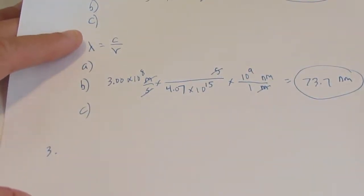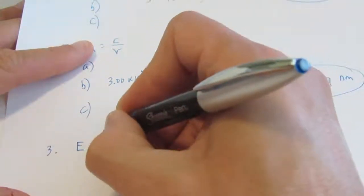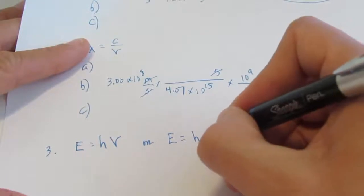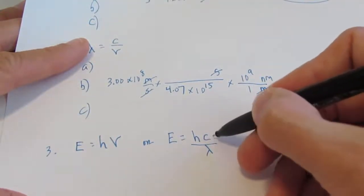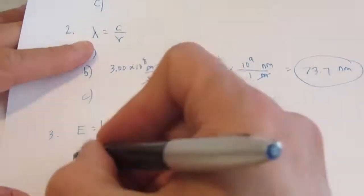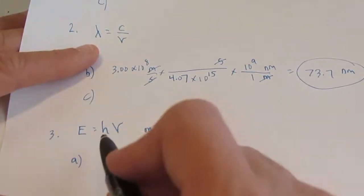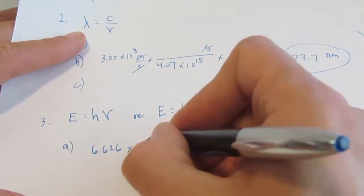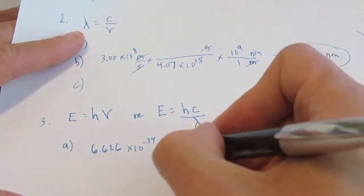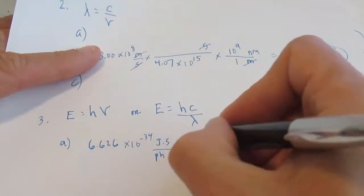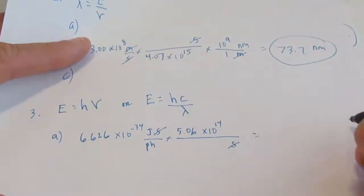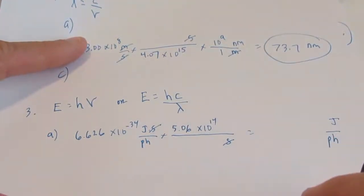Let's hop down to number three. Number three: I want the energy in joules. We're going to use one of two equations. Energy equals h, Planck's constant, times the frequency; or energy equals h times C over lambda — remember C over lambda is the same as frequency, so I can use either equation. On letter A I give you the frequency, so we use E = hν. H is 6.626 times 10 to the negative thirty-fourth joule seconds per photon, multiplied by the frequency given: 5.06 times 10 to the fourteenth, with unit one over seconds. Seconds divide out and we're left with joules per photon. I'll let you finish that on your own.